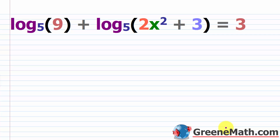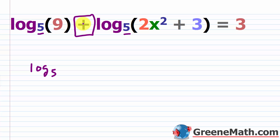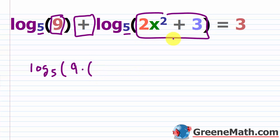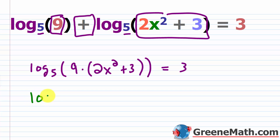Let's take a look at another one. We have log base 5 of 9 plus log base 5 of 2x squared plus 3, and this equals 3. For this type of scenario, you want to turn to your properties of logarithms. Notice you have the same base and addition involved, so we can condense this into one logarithm. When condensing addition, you turn it into multiplication: log base 5 of 9 times the quantity 2x squared plus 3, and this equals 3. Expanding: log base 5 of 18x squared plus 27, and this equals 3.